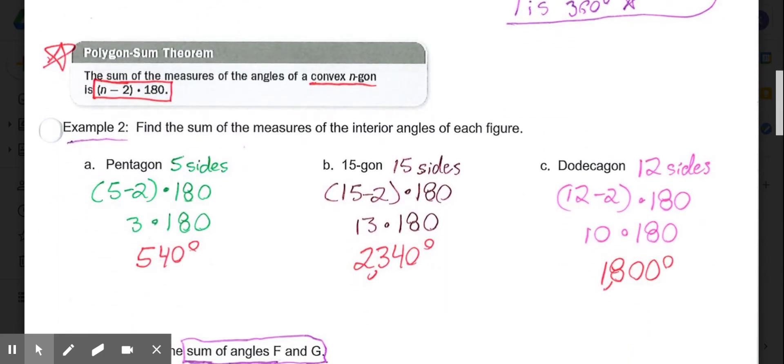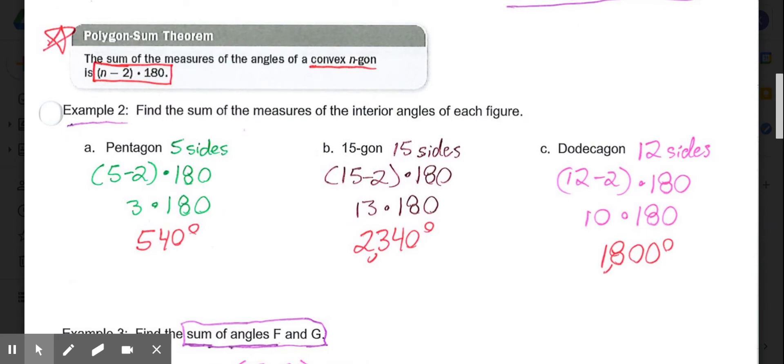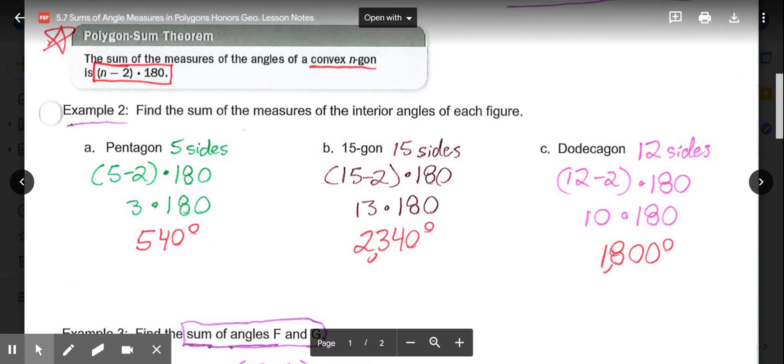Then, for any general polygon, we have the Polygon Sum Theorem, which says the sum of the measures of an angle of any convex n-gon. Again, remember convex doesn't work for concave. Our expression is the number of sides minus 2, in parentheses, multiplied by 180.